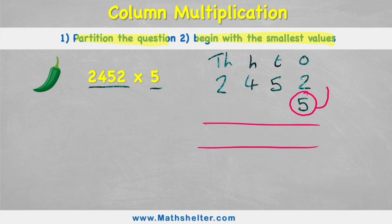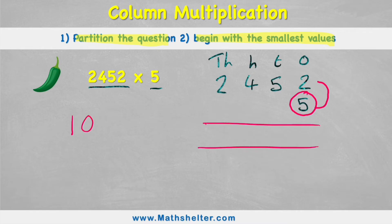I'm going to multiply it first by two. Five times two is ten. Now I have a small problem, because I can't put ten just into this block here, because that would mean I've got a ten in the ones column. And the ones should only have single digits. So just like any other column method, like addition, I'm going to separate my ten by realizing that ten has zero ones and a ten. So I roll the ten into the next column by putting it in the tens column.